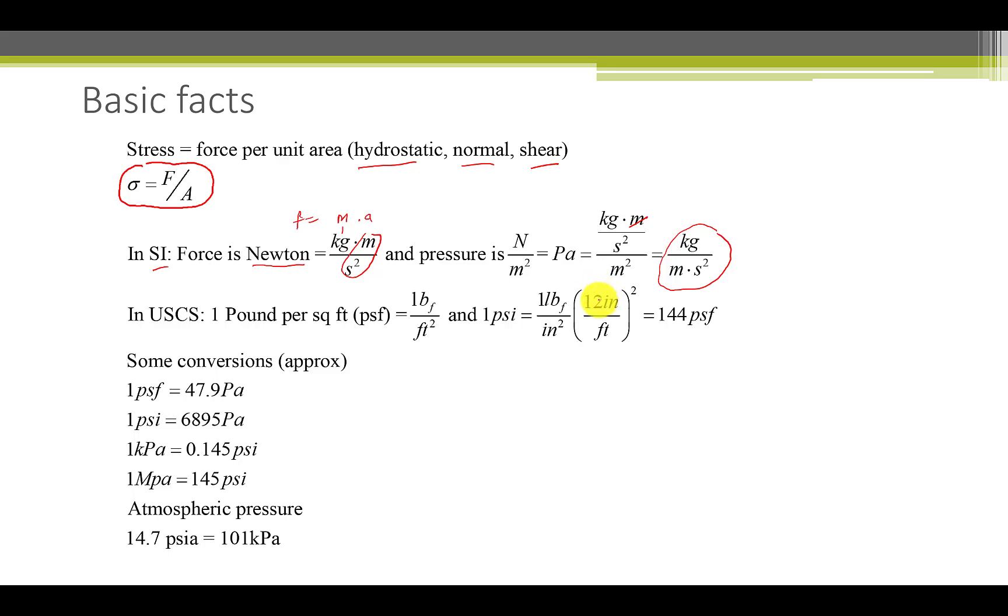In the USCS, we use the PSF or pounds force per square foot. We'll also use PSI. PSI is defined as one pound force per square inch. That can easily be converted by multiplying by the square of 12 inches per foot. And that's 144 PSF.